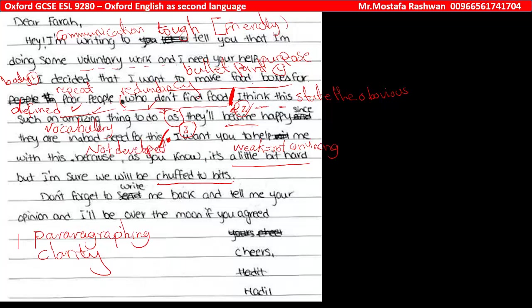Finally, he said: 'Don't forget to write me back and tell me your opinion, and I'll be over the moon if you agreed.' The student used two idioms, showing some informal register, but the letter closes with 'yours' and his name, Heidi.